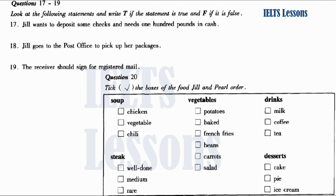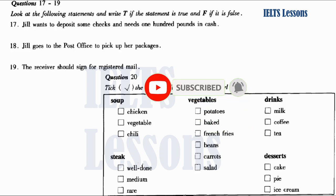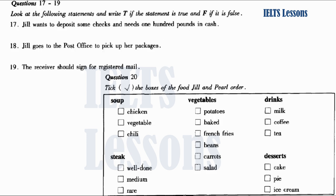Then Jill goes to the post office. I have to pick up a letter and mail these packages, please. Here is the notice for the letter. Just a moment, I'll get it. Here you are. I'm going to need to see some identification. And will you sign this form, please? Are you going to certify these packages? Would you like to register them? Will you insure them? The receiver will have to sign for registered mail, and you can ask for a return receipt — that means we will send you a notice of delivery. I want to register them and insure them too.